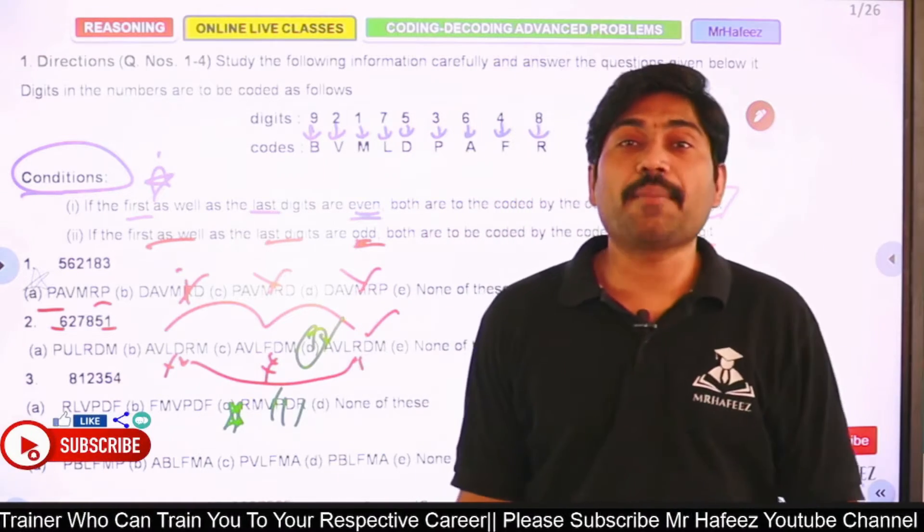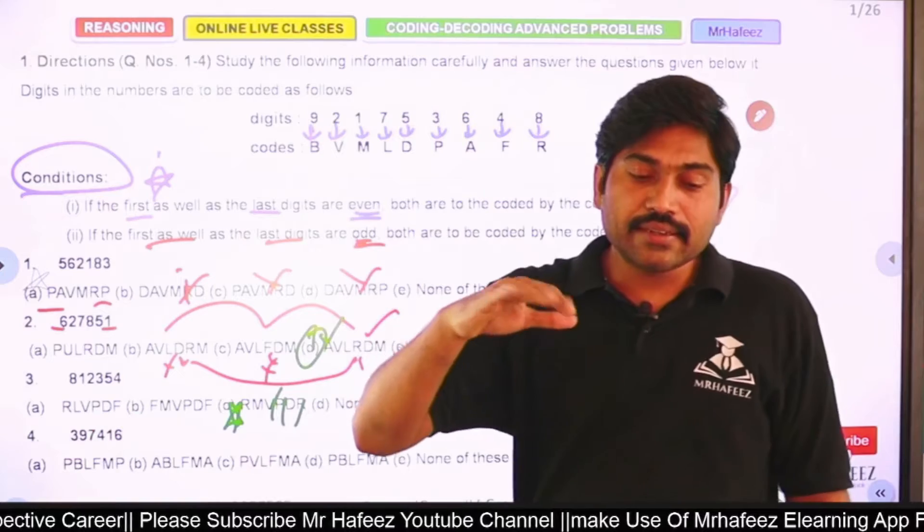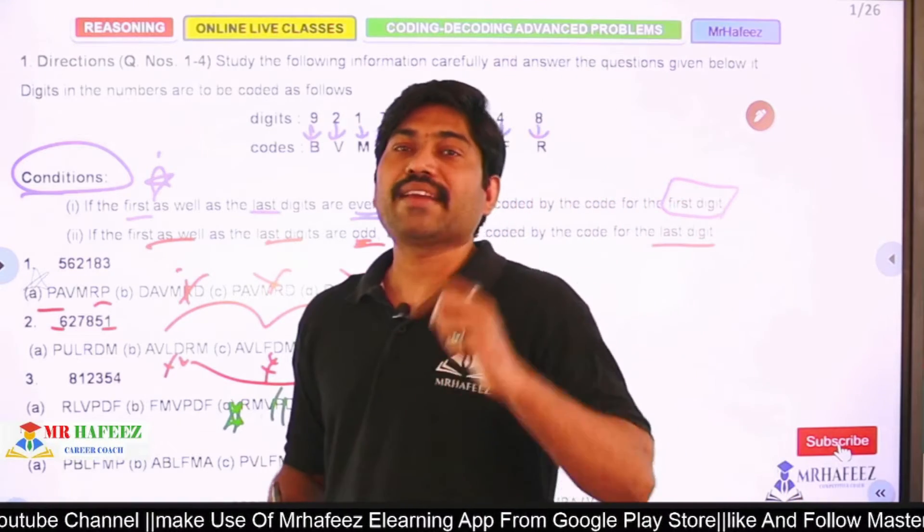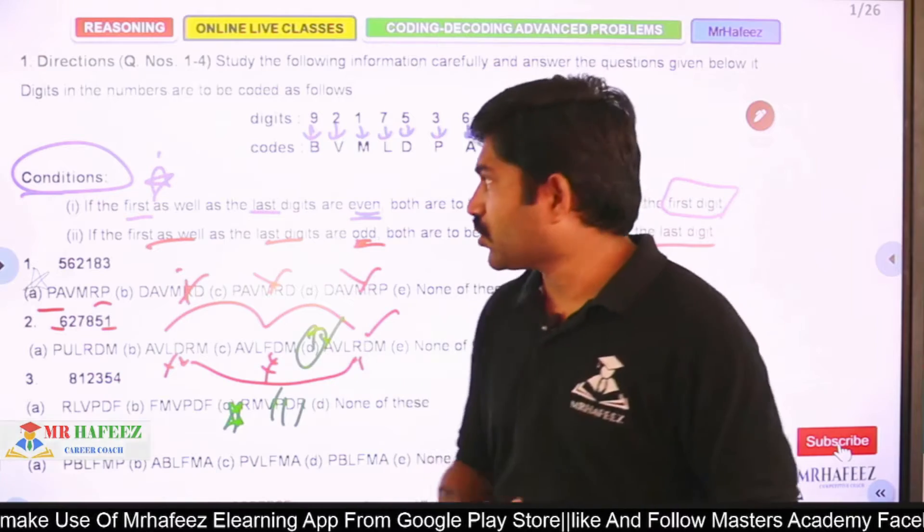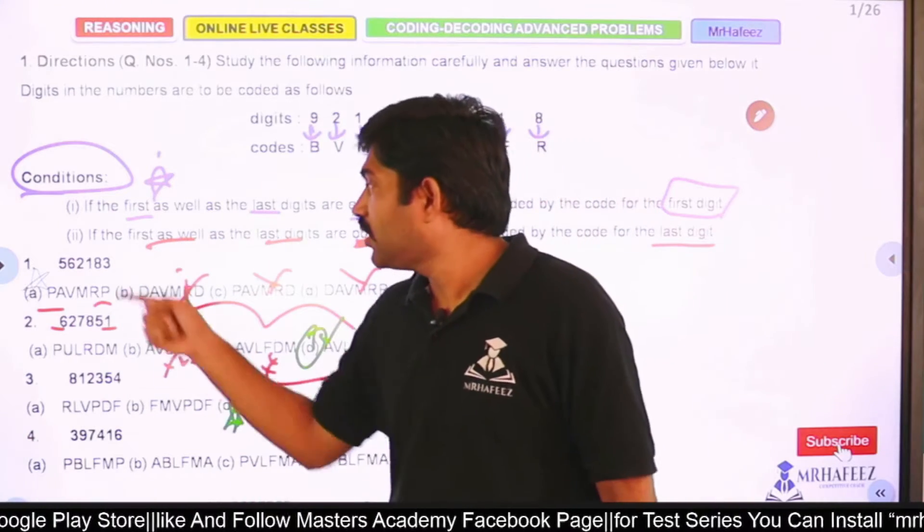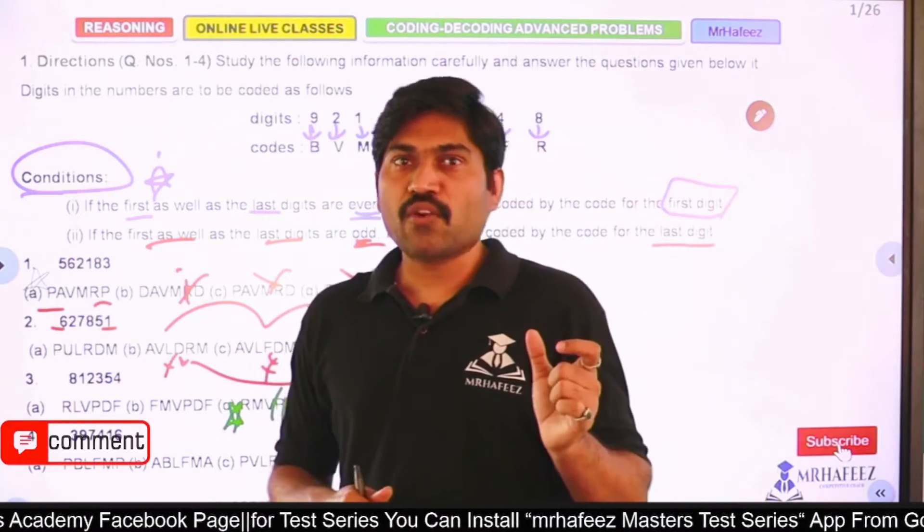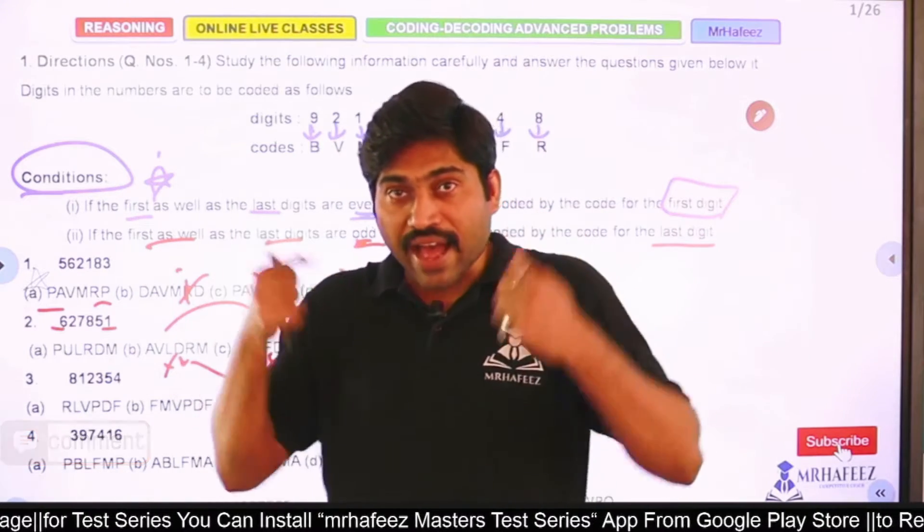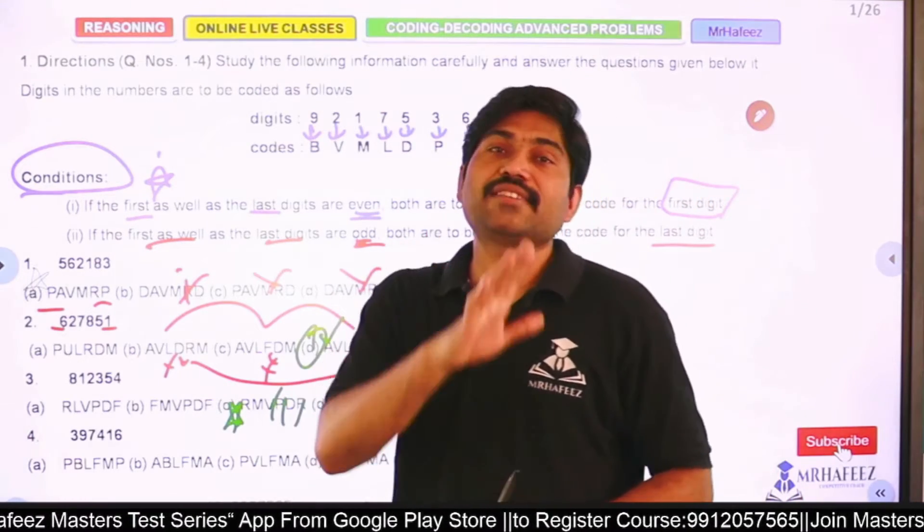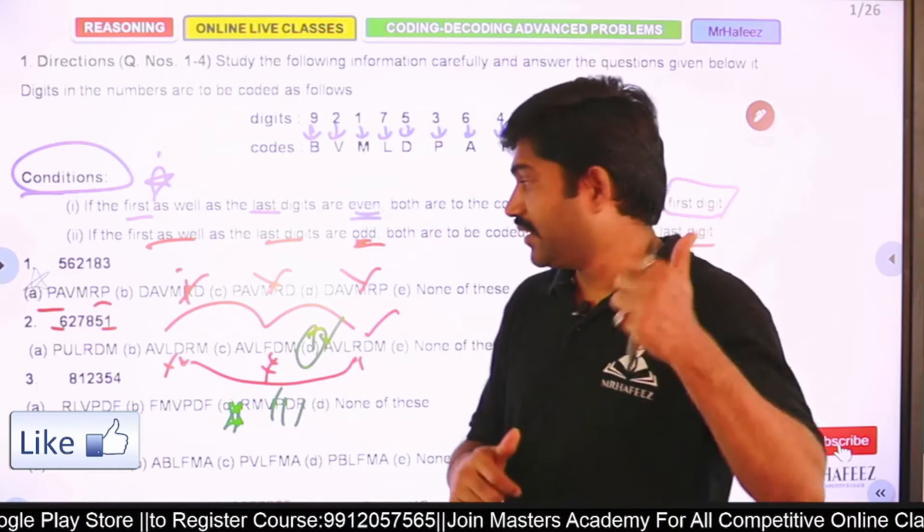So if that is clear, type CLR in the comment box. This is very important. Now, in advanced coding methods, more advanced problems will come only in the banking sector, not in staff selection commission. Banking sector questions are more advanced. These conditions and answers are all given, but you should be able to analyze - when odd number is there, it's like this; when even number is there, it's like this. That is what advanced coding methods at present exams are testing in the banking sector. If you are clear, type C in the comment box. Excellent.